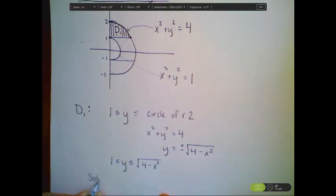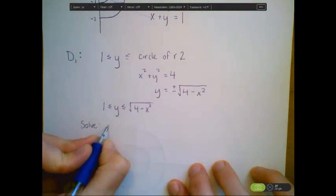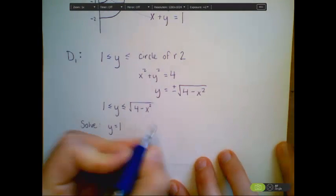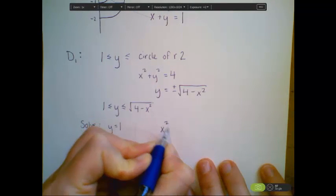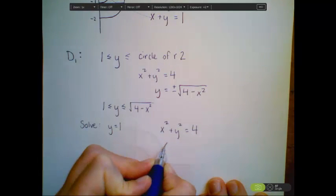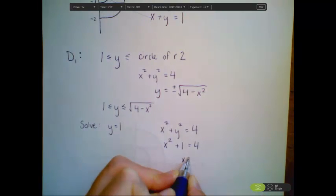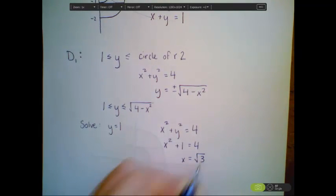So I'm going to solve, if y equals 1, where am I at on the curve x squared plus y squared equals 4? I just plug in 1 for y in this case, and I get x squared plus 1 equals 4, where x is equal to the square root of 3. So now we know what the bounds on x are.